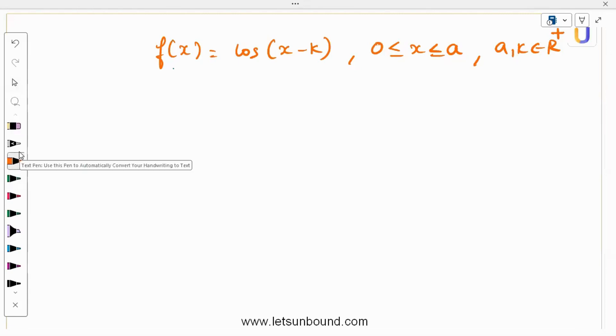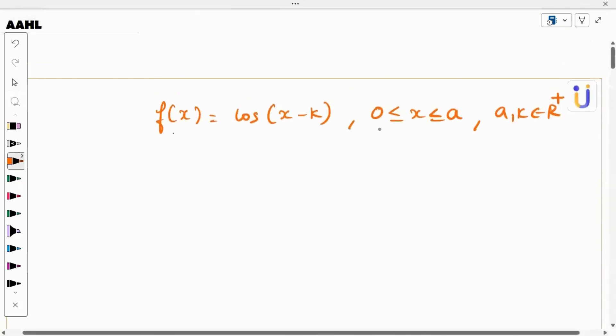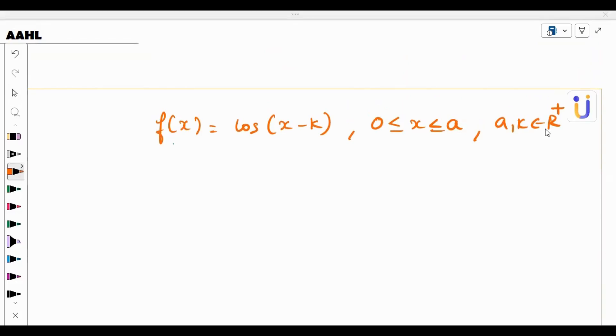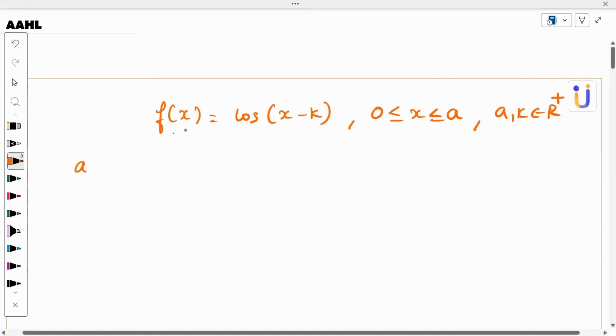f(x) is cos(x - k). The condition is 0 ≤ x ≤ a, where a and k both belong to R plus, positive real numbers. And it was asked, so three subdivisions we have. First, we need to consider the case when k is equal to π/2.